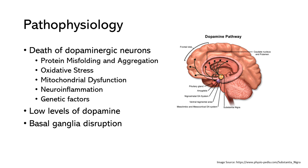One theory suggests abnormal folding and aggregation of proteins in dopaminergic neurons may play a role in their death. A protein called alpha-synuclein accumulates and forms abnormal clumps called Lewy bodies. These disrupt normal cellular processes and can lead to the death of dopaminergic neurons.